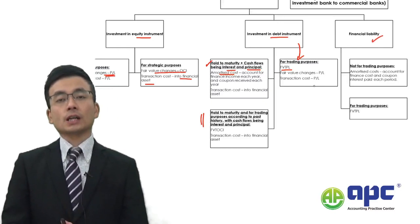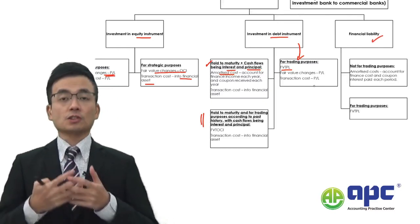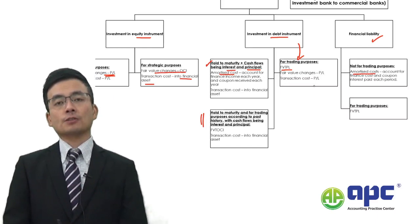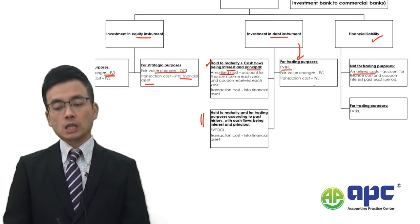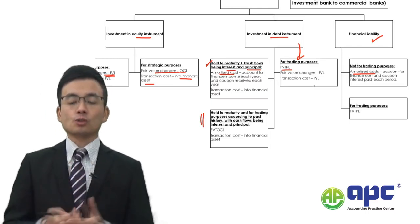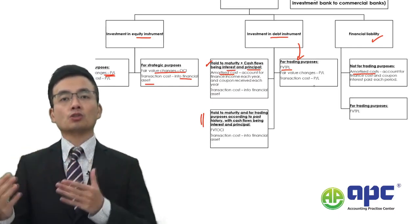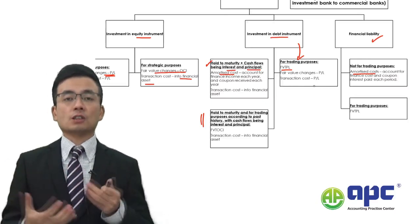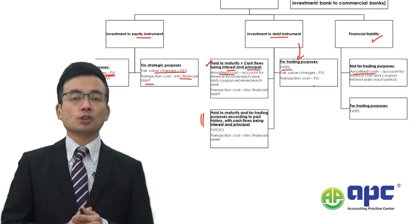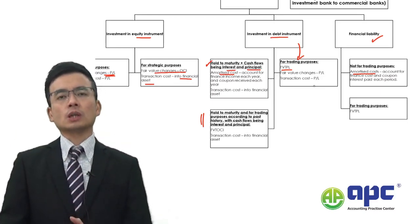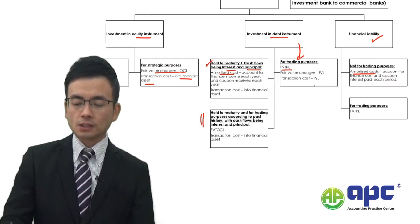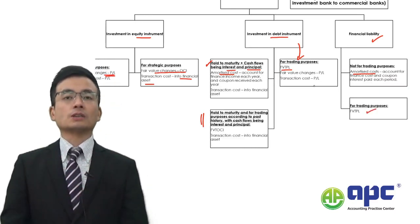For financial liabilities: if not for trading purposes — which is 9 out of 10 cases — use the amortised cost method and recognise finance costs. If it is for trading purposes — for example a financial liability that is subsequently negotiable and transferable, such as derivatives, futures contracts that can be immediately resold in the financial market — calculate fair value changes and put them directly into P&L.